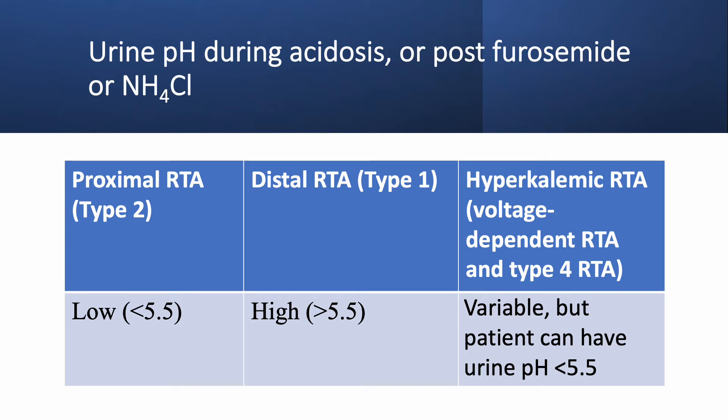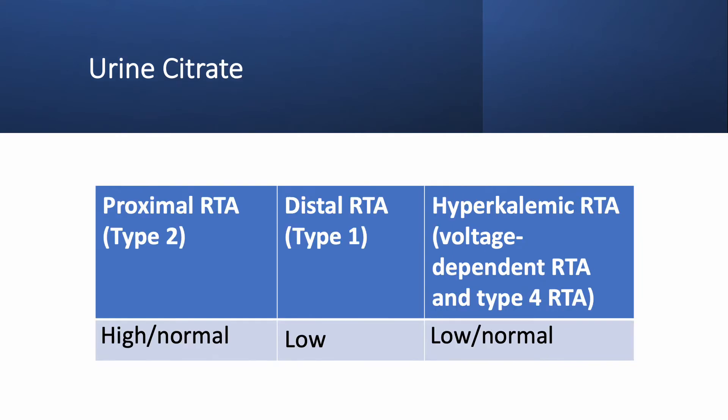Sometimes you can distinguish between proximal and distal based on urine pH. If urine pH is low — say 5.2 or 5.1 on a test question — there is no way you have distal RTA. It must be proximal.